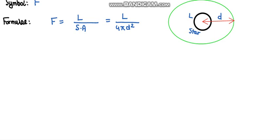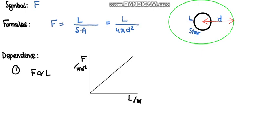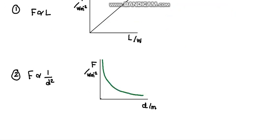Let's see the dependence of the radiant flux intensity on the power and on the distance. Number 1 is that the radiant flux intensity is directly proportional to the power of the star, and its graph would be a straight line of the flux intensity versus the power. Next is that the flux intensity is inversely proportional to the distance squared. The graph of flux against distance would be this shape, and flux against 1 over distance squared would be a straight line.